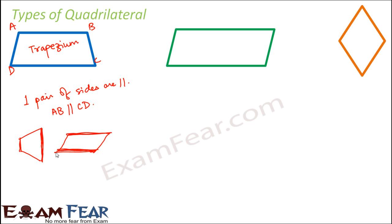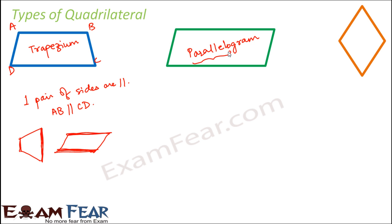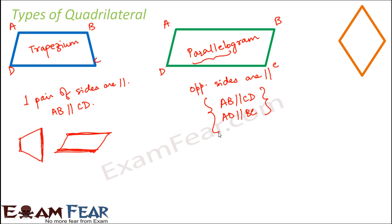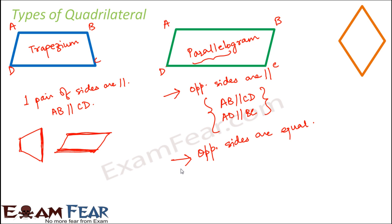The next type of quadrilateral is a parallelogram — the most common type, and within parallelogram itself there are many different sub-types. The word parallel is in its name. In a parallelogram, two pairs of opposite sides are parallel. Naming it ABCD, AB is parallel to CD and AD is also parallel to BC. Not only are opposite sides parallel, but opposite sides are also equal. These two features — opposite sides parallel and equal — distinguish a parallelogram.